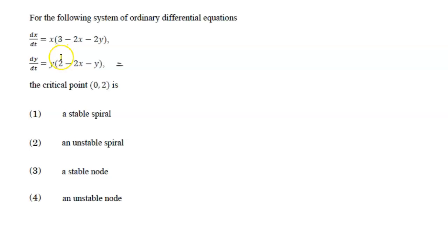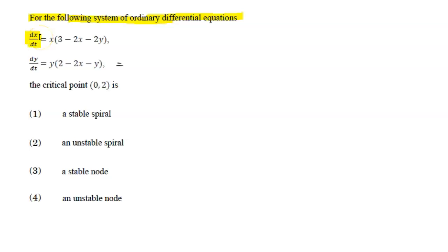Hello everyone, once again welcome back to Mathematics Student YouTube channel. In this video we are going to discuss questions from ordinary differential equations from the December 2019 question paper. The first question is from Part B: for the following system of ordinary differential equations with dx/dt and dy/dt, the critical point is (0,2). Find out what will happen if we solve this question.